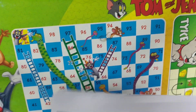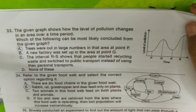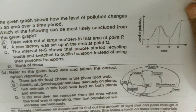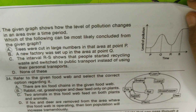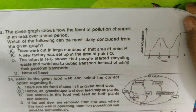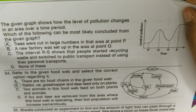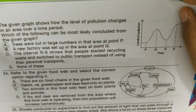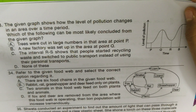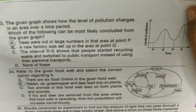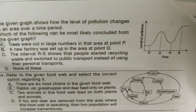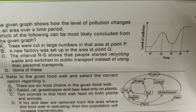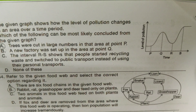We are almost there! Question 33: the given graph shows how the level of pollution changes in an area over a time period. Which of the following can be most likely concluded from the given graph? Trees were cut in large numbers in that area at point P — and that is A.